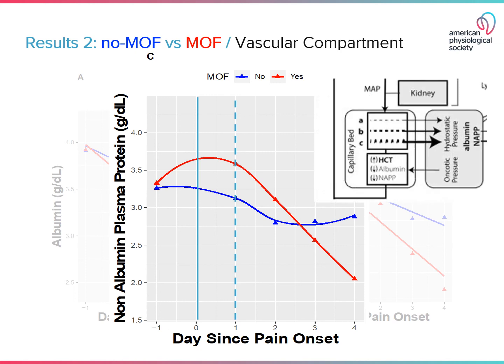After day one, there is a precipitous drop in non-albumin protein as the large molecules leave the vascular compartment and are not returned. This is the third pore size shown in our previous model, suggesting the loss of non-albumin plasma proteins and albumin into the interstitial space and the third space without return to the vascular compartment. We believe this is the underlying cause of the fluid shifts resulting in multi-organ failure in patients with severe acute pancreatitis.